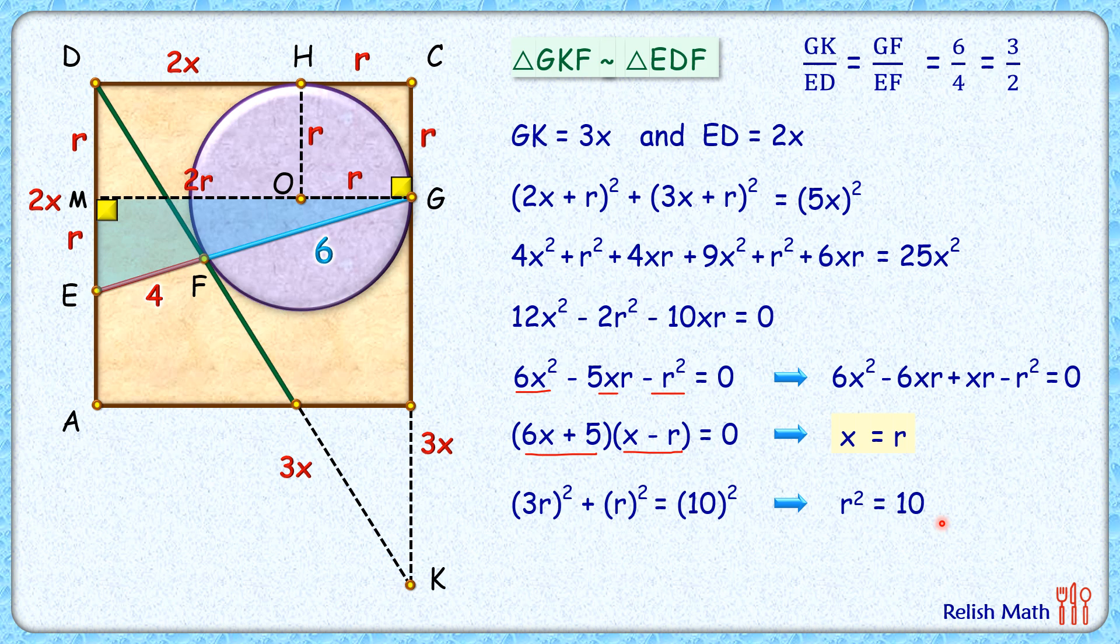And area of this square: area of square is side length squared. Side length is 2r plus r or 3r, so area of square is (3r)² = 9r². Since r² = 10, putting this value we get area of this square as 90 centimeters squared. And that's our answer. I hope you enjoyed the solution. I will see you in the next video. Till then, tata, bye bye.